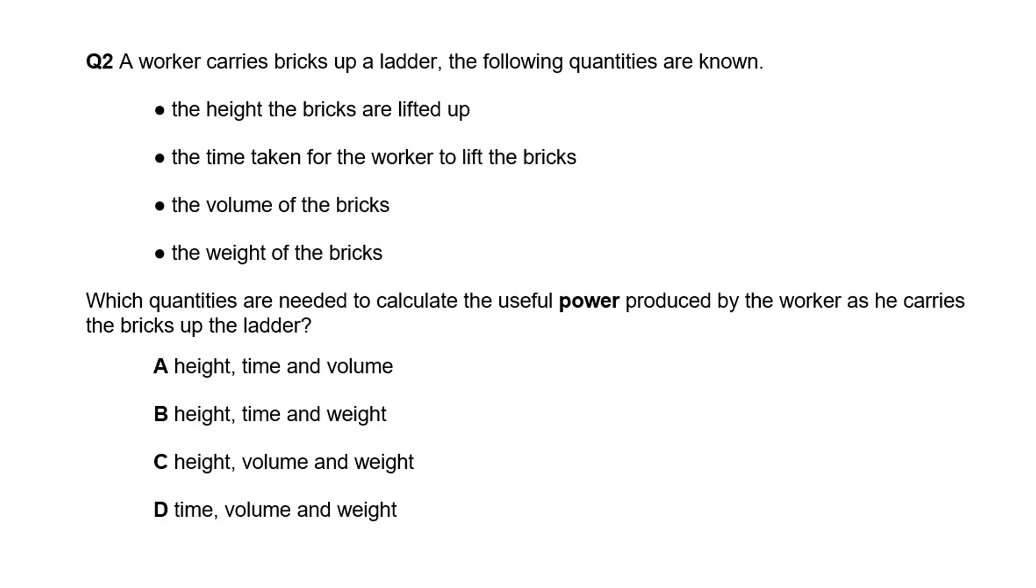A worker carrying bricks up a ladder. The following quantities are known: the height lifted, the time it takes, the volume of the bricks, the weight of the bricks. Which are needed to calculate the useful power? You could calculate the energy required using mass times gravity times height, and to turn energy into power we divide by time. So mg is the weight force. We need the weight force, the height, and the time. That's option B.